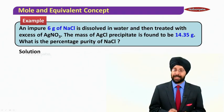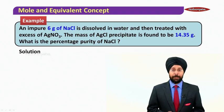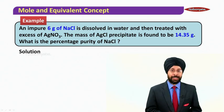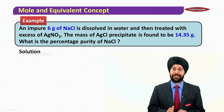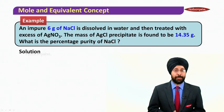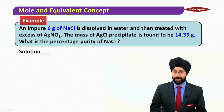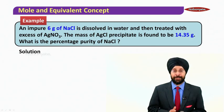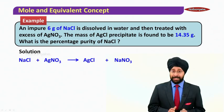Let us take the example first. An impure 6 grams of NaCl is dissolved in water and then treated with excess of silver nitrate. The mass of AgCl precipitate is found to be 14.35 grams. What is the percentage purity of NaCl?